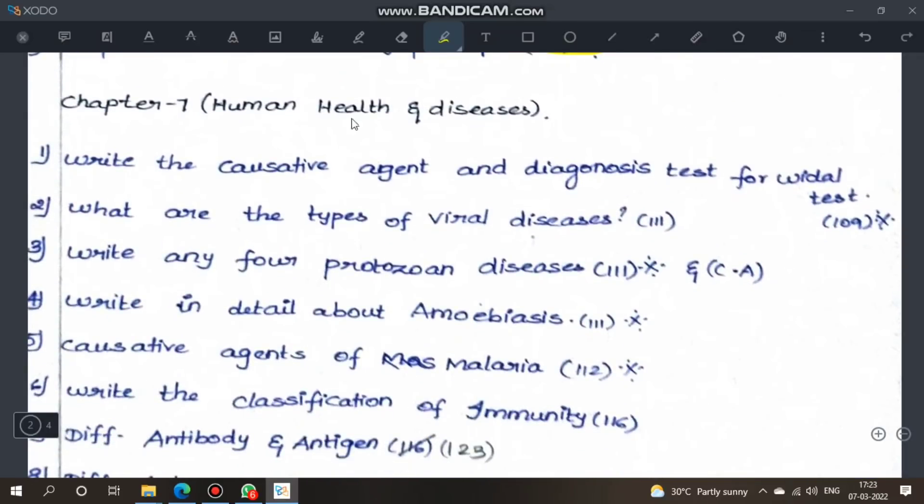Next, Chapter 7 Human Health and Diseases. First question, write the causative agent and diagnosis test for typhoid. Next, what are the types of viral diseases, page 111. Write any four protozoan diseases, very important question, with causative agent. Page 111, write in detail about amoebiasis. Causative agents of malaria: plasmodium types. Plasmodium vivax, falciparum, etc.